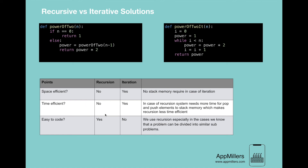The next point is time efficiency. Recursion is not time efficient because it repeatedly invokes the method call mechanism, leading to overhead in processor time. Additionally, the system needs extra time to push and pop elements to and from stack memory. Iteration, by contrast, does not use stack memory in this way, making it time efficient.